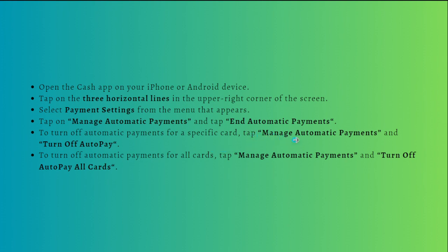To turn off automatic payments for a specific card, tap Manage Automatic Payments and then tap Turn Off Auto Pay. To turn off automatic payments for all of your cards, tap Manage Automatic Payments again and then select Turn Off Auto Pay for All Cards.